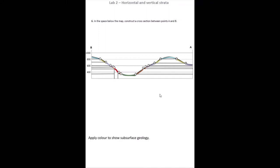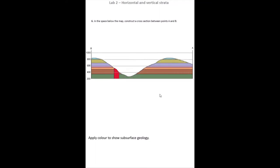Then what I can do is apply some of the color that was used on the map onto my cross-section in order to show the subsurface geology. So your cross-section should end up looking something a bit like that.